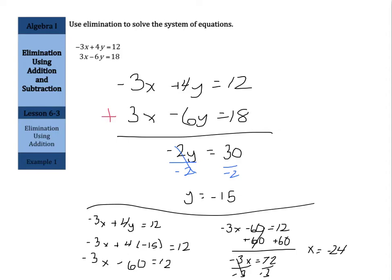And now, finish this off by writing in the ordered pairs. The x is negative 24, the y is negative 15. And that is your solution using elimination for the systems of equations.